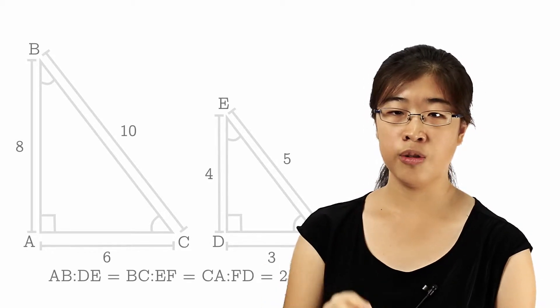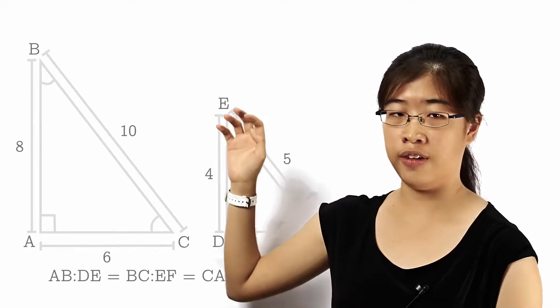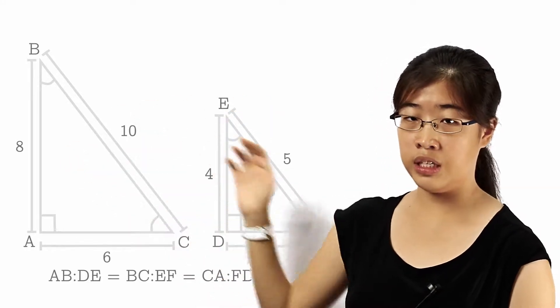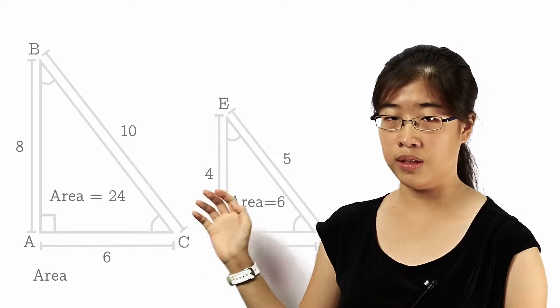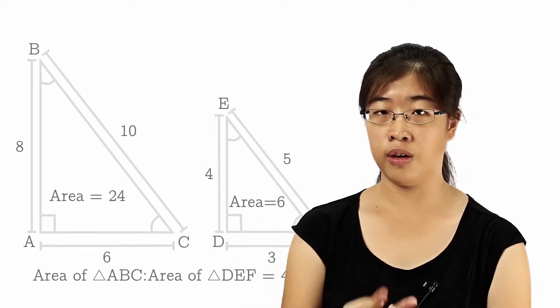If you calculate their areas, you will realize that the ratio of area ABC to DEF is actually 4 to 1. 4 is also the square of 2.